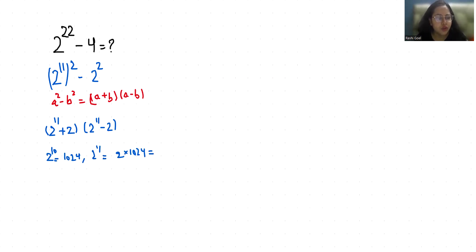So it is 2048 + 2 and 2048 - 2. So 2048 + 2 is 2050 and this is 2046. Now 2050 I can write as 2000 + 50 and 2046 as 2000 + 46. Now multiply.